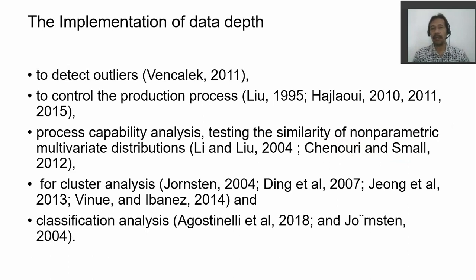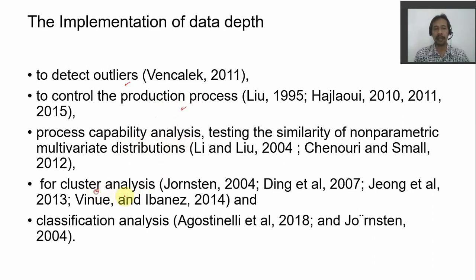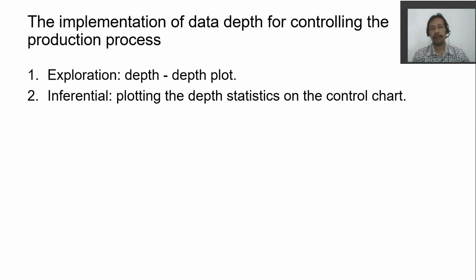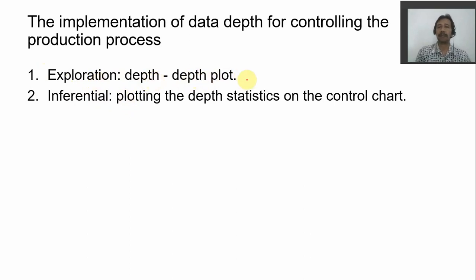There are many implementations of data depth: first, to detect outliers; second, to control the production process; third, for process capability analysis; fourth, for cluster analysis; and fifth, for classification analysis. For controlling production processes, there are two steps: the exploration step using a depth-depth (DD) plot, and the inferential step using the plotting of depth statistics on a control chart.